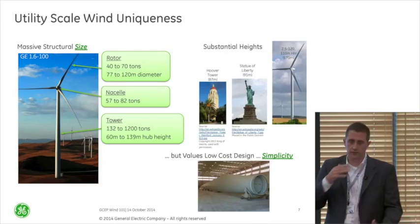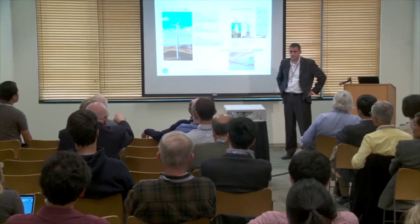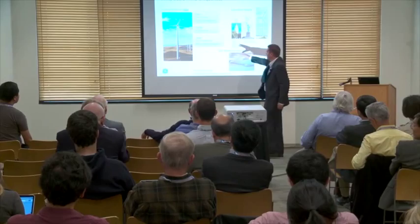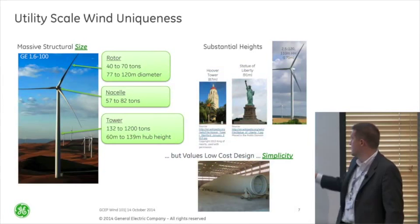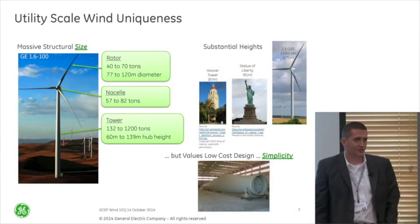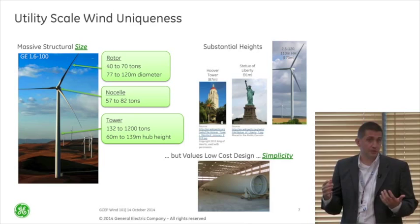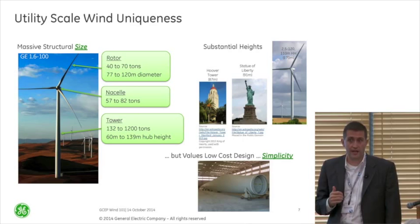We have a suite of products, and the 1.6-100 is on the lower side. When we get to our bigger platform — typically for Europe — we get into some of the higher sides. For substantial height comparison, we have the Hoover Tower here on campus. Our 2.5-120 machine is about double the height of that tower — imagine how big that would look on this campus. So these things are massively sized, and when you're trying to prove out a new technology, how do you do it at scale? It becomes very difficult and very expensive to have a test bed for full-scale wind testing.